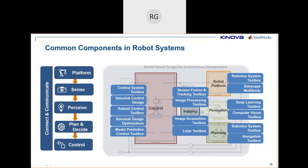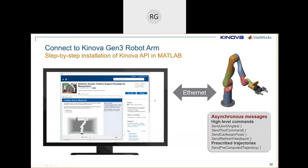Eight years ago, building a robot application meant writing code for each component step-by-step with everything hard-coded — a process that could take six months. Now, with Simulink, it's much faster. To start, we always look at connecting with the robot platform first. With the Kinova robot, Kinova built an API that makes this easy. Using Robotic Systems Toolbox, you can add a support package that supports Kinova, and once added, you can easily set up and connect to the Kinova robot with a ton of ready-to-use functionality.